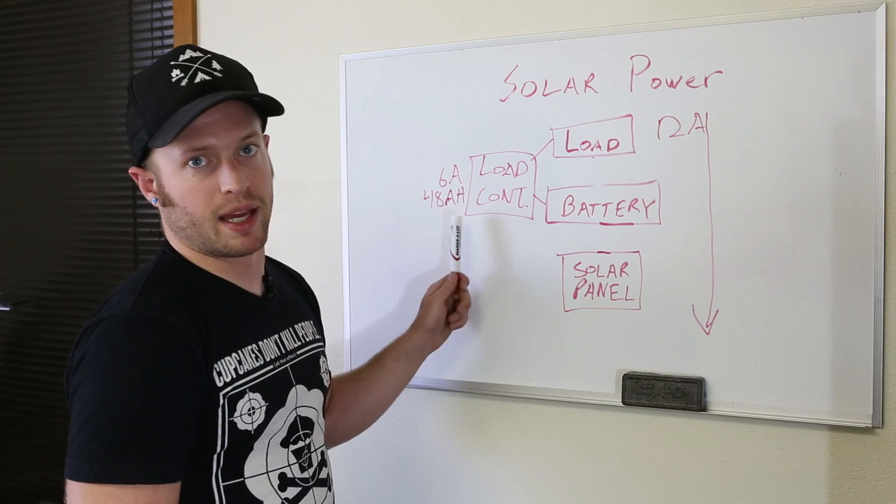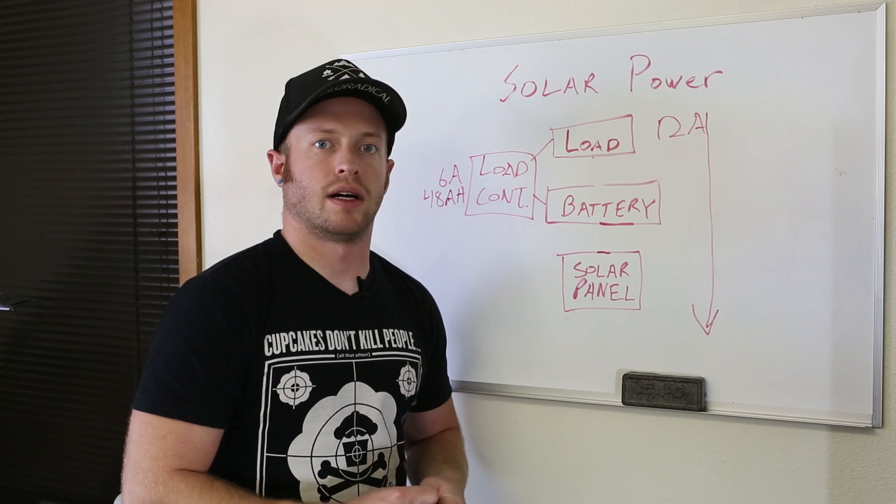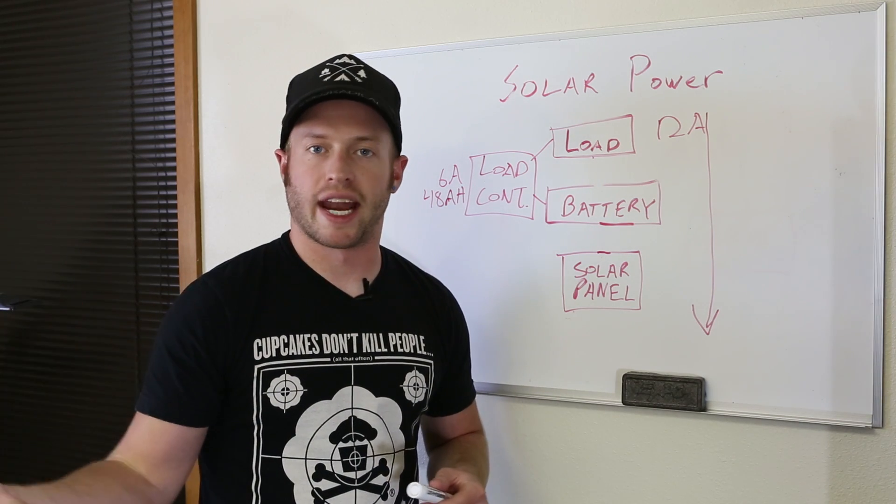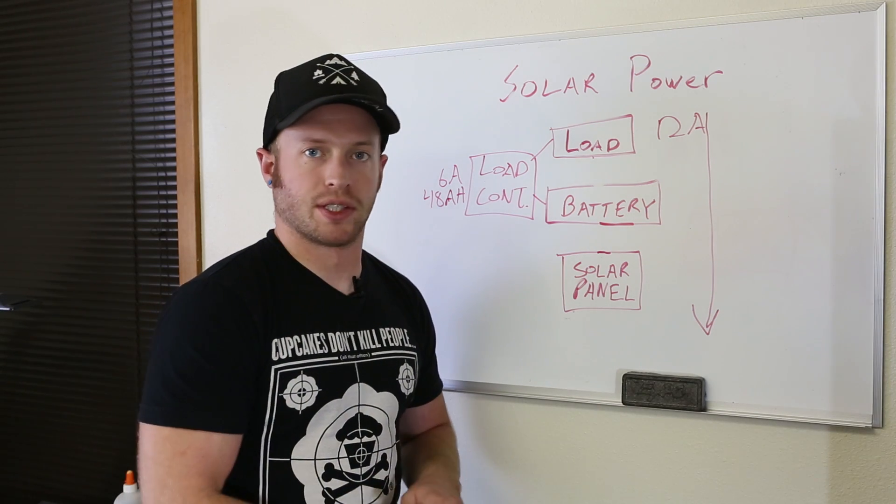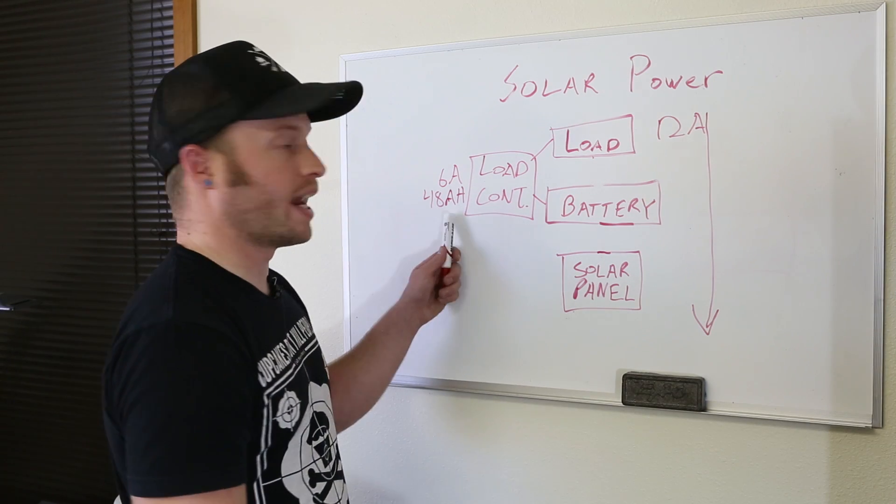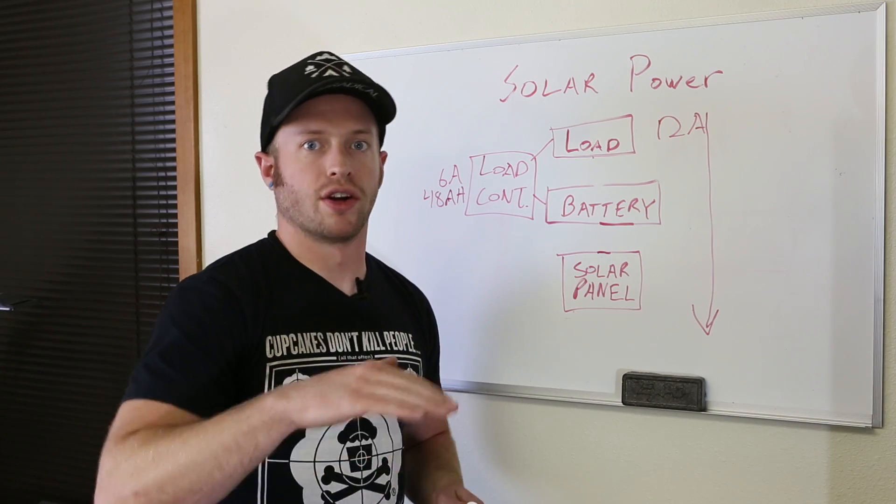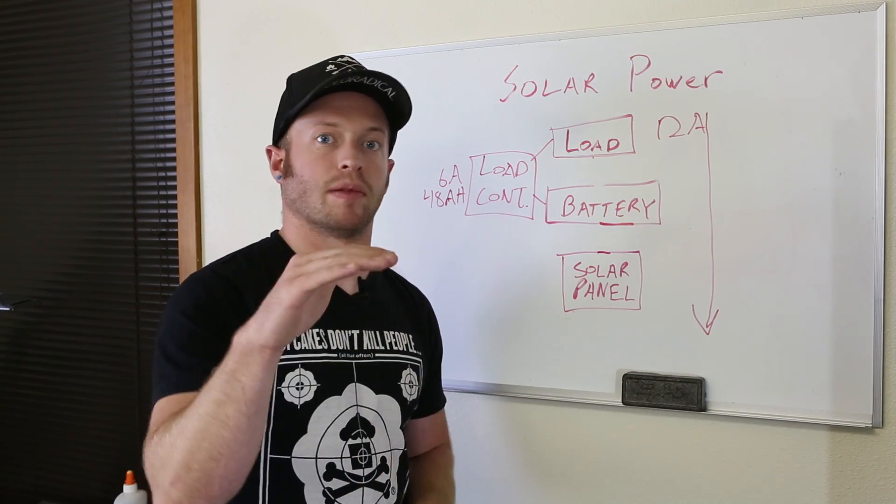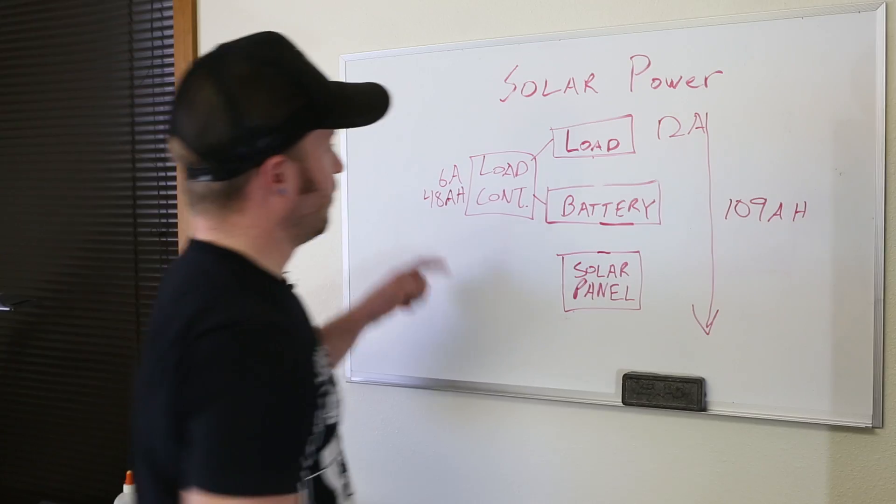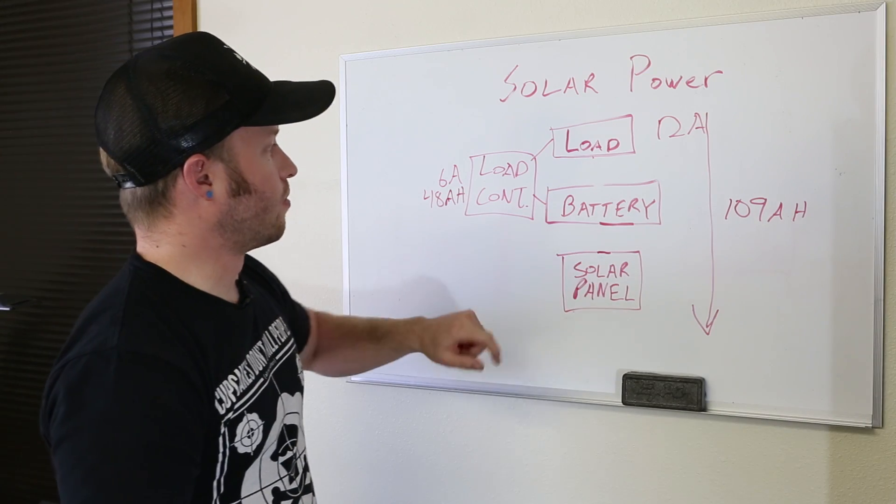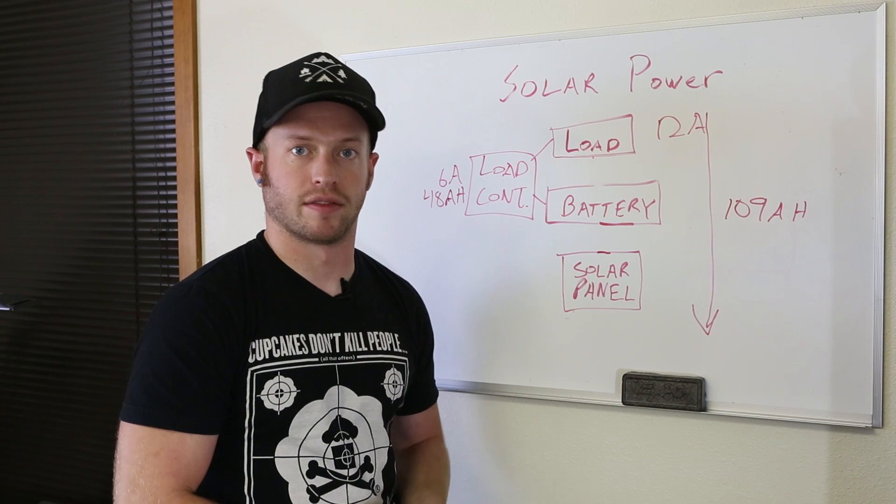But how many amp hours should that battery be? Obviously it's got to be more than 48. But one of the quirks about these lead acid batteries is that you don't want to be draining them more than 50% of their capacity. So if I have a 48 amp hour requirement, I don't want the battery to go under about 48 amps. I'm gonna have to double it. So what I ended up with was a 109 amp hour battery. Even if I leave it on too long and it drains it even more, I've still got a few amp hours left in the battery so that it never goes under 50% of its capacity.